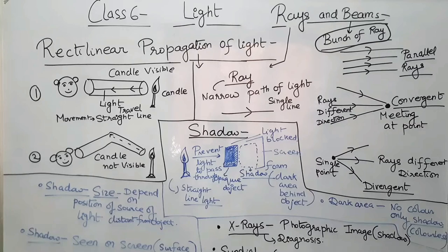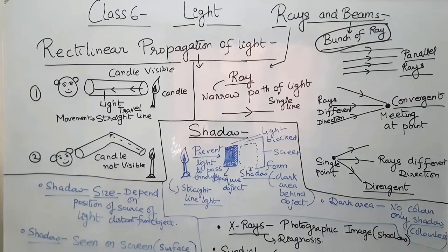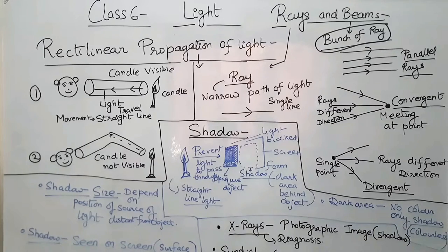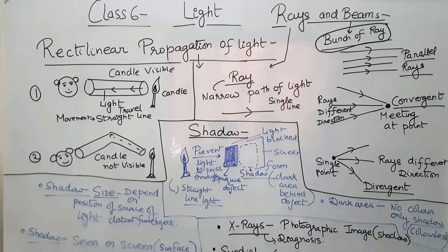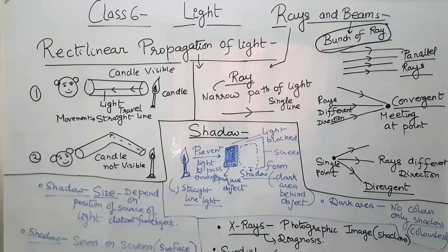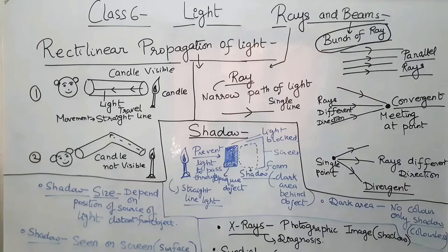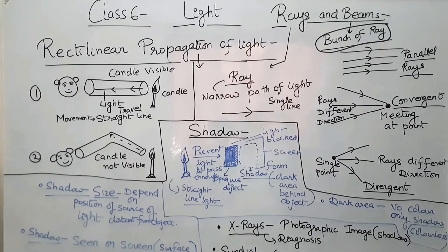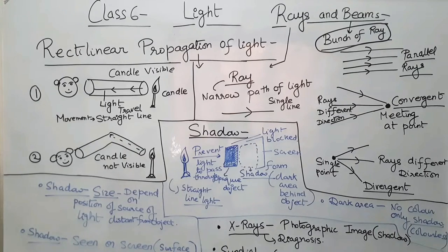A ray is a narrow path of light in a single line, and a beam is a bunch of rays. There are three types of beams: parallel rays, convergent — where rays from different directions meet at a single point — and divergent — where rays from a single point spread out in different directions.